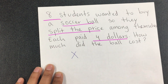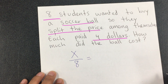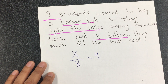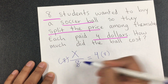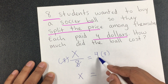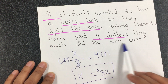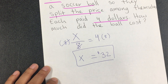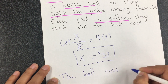So the price of the ball divided by eight equals four. The opposite of division is multiplication, so this cancels and X equals four times eight, which is thirty-two. The question is: how much did the ball cost? X is the total price, so the ball cost thirty-two dollars.